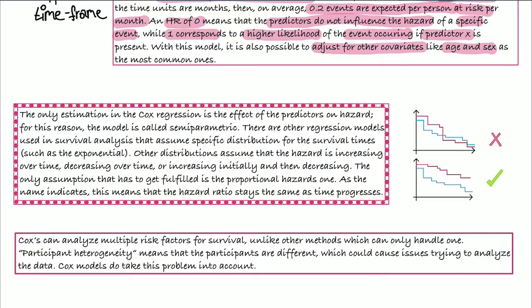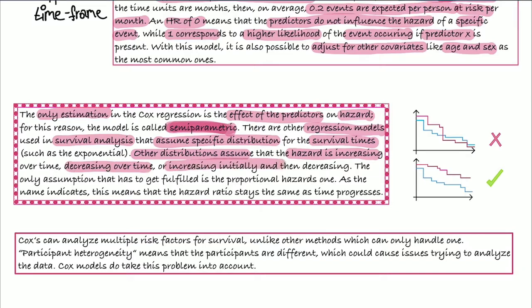Now the only estimation here is the effect of the predictors on hazard. Therefore we call this model semi-parametric. And we have other regression models which assume a specific distribution for the survival times, which can be exponential. And there are also other distributions which assume that the hazard is increasing over time, decreasing over time, or initially increasing and then decreasing.